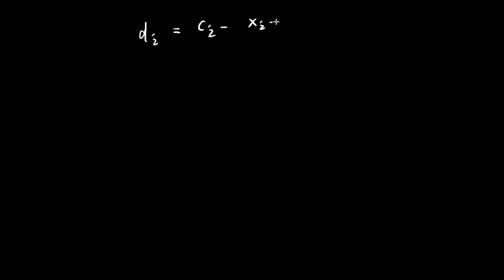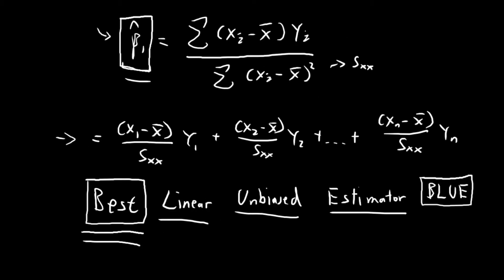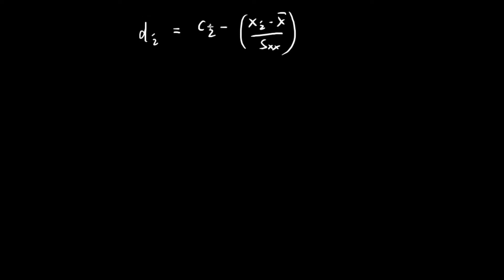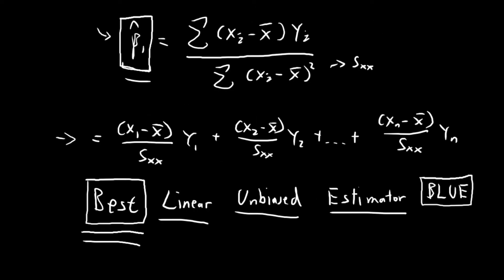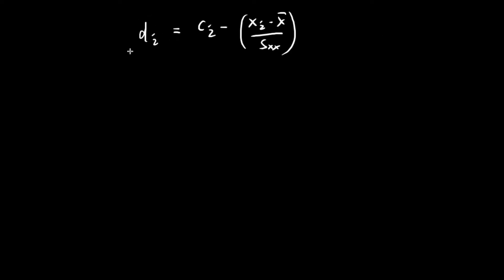Now I'm going to define a new term called di. And di is equal to ci minus (xi minus the sample mean of x) divided by s_xx. You can see that this second term is just the constants attached in front of the y terms for beta 1 hat. I'm going to introduce a shorthand and call this gi. So di is equal to ci minus gi, which means ci is equal to di plus gi.